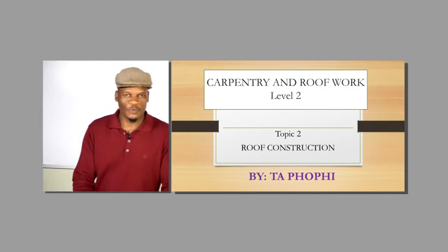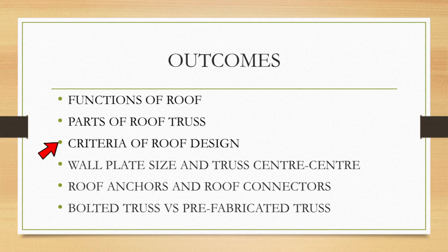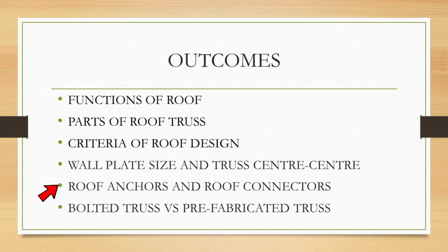The outcomes we are going to look at are as follows: we will look at the functions of the roof, the parts of the roof truss and all the members that form the roof trusses, the criteria used to design different types of roofs, and the wall plate — including their sizes, where we place them, and for what specific reason we need the wall plate. We will also look at roof anchoring, which is used to tie down the roof.